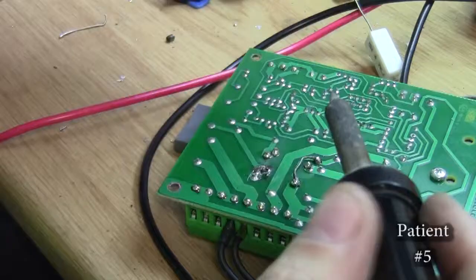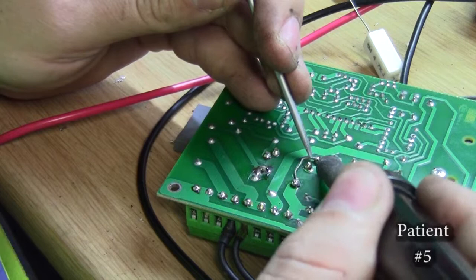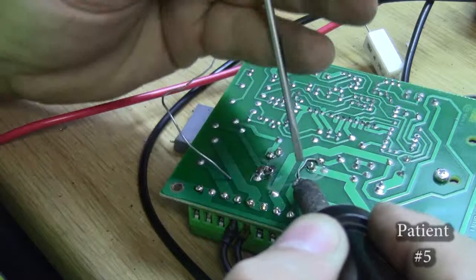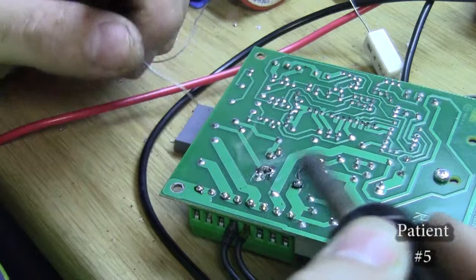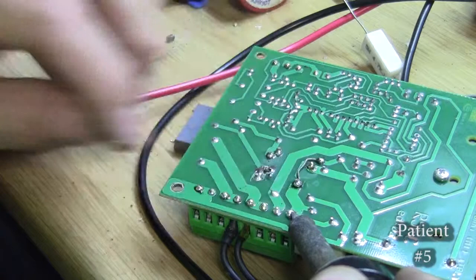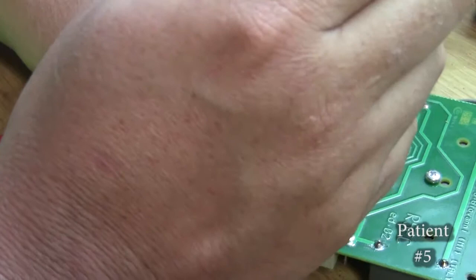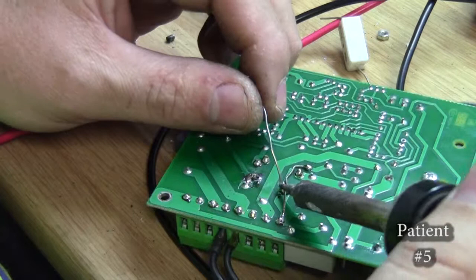So some things you can't get schematics for. It's closed or proprietary whatever. Which case just try anyway. Maybe we'll get it. Maybe it's something easy like a broken trace. Or something you can see like a burn mark where part went missing and all that. I don't like the way that one's bubbling up. So I'm going to put another link down to the side anyway. Just as an added precaution.